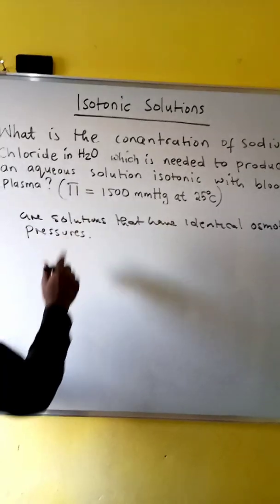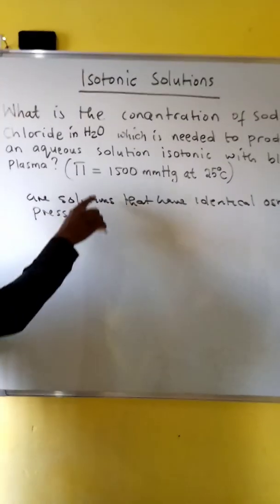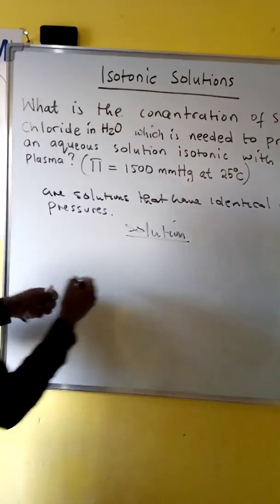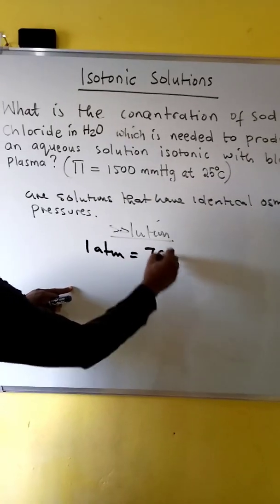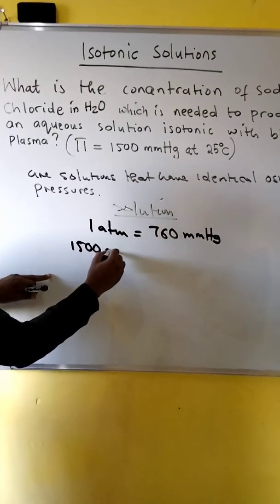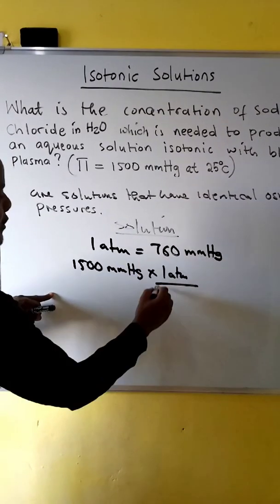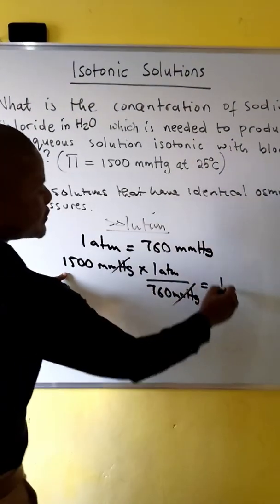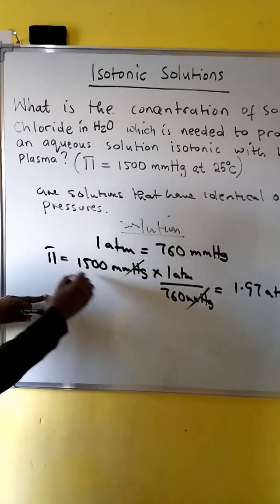The osmotic pressure is equal to 1500 millimeters of mercury at 25 degrees Celsius. We'll first need to convert osmotic pressure into atmospheres. We know that one atmosphere is equal to 716 millimeters of mercury. So we have 1500 millimeters mercury times one atmosphere over 716 millimeters mercury — these cancel — giving us 1.97 atmospheres.